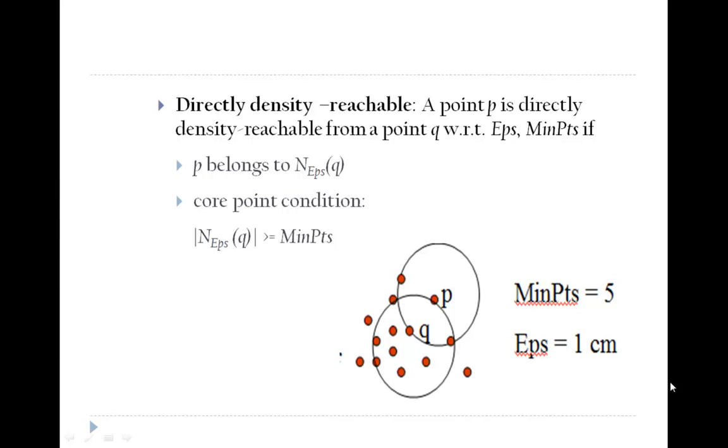Directly density reachable: A point P is directly density reachable from a point Q with respect to epsilon and min points if P belongs to the neighborhood of Q and the core point condition is satisfied.